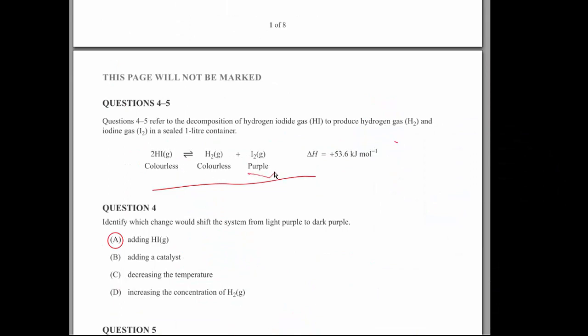So we've got purple. And that's endothermic, so you're right, heating over on this side. And it's in a sealed one liter container. So, identification change would shift from light purple to dark purple. So we're looking for shifts this way. Sorry, so that's going the other way to make it dark purple. So adding this pushes it over there. That's fine.